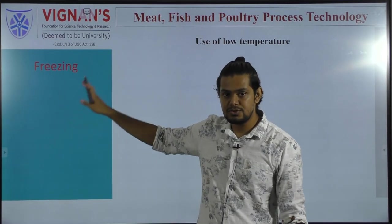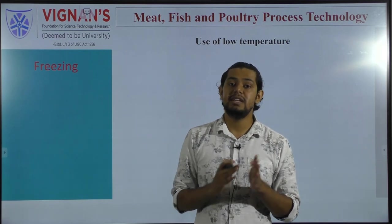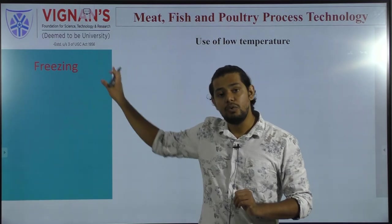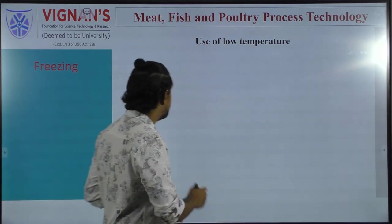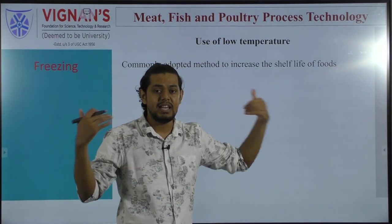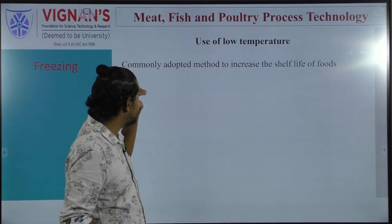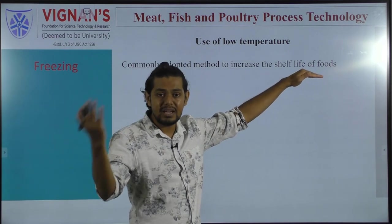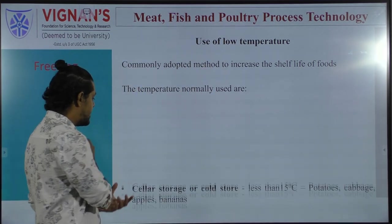Now for freezing — chilling keeps meat at -1.4 to 2.2 degrees centigrade. Use of low temperature is a commonly adopted method to increase the shelf life of foods. Temperature ranges include cellar storage below 15 degrees centigrade, suitable for vegetables like potatoes, cabbage, apples, and bananas, and chilling at 0 to 10 degrees centigrade, suitable for milk, eggs, vegetables, and fruits.